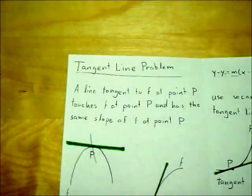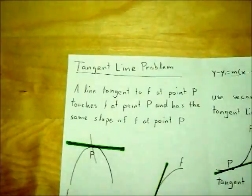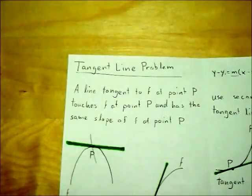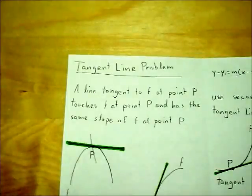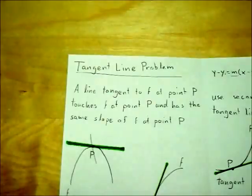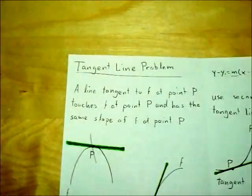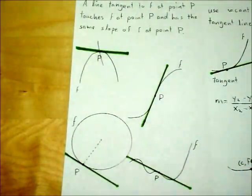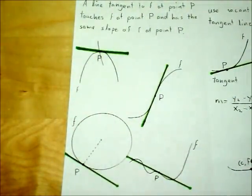Starting with the tangent line — what is a tangent line? When you say that a line is tangent to a function f at point p, it means that the tangent line touches function f at point p and that it has the same slope as f at point p. As you see in the examples, a tangent line may or may not intersect the function f at multiple points.